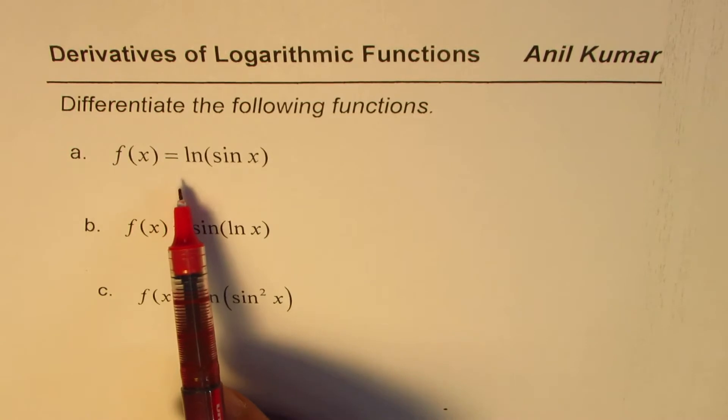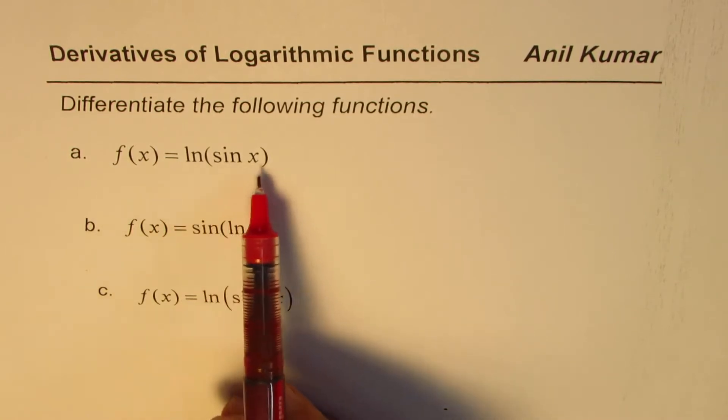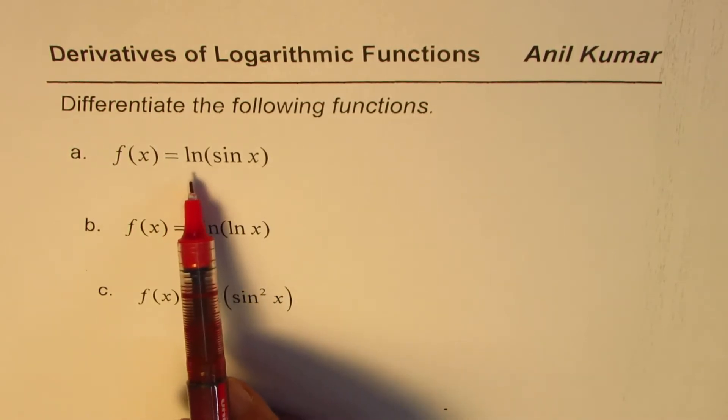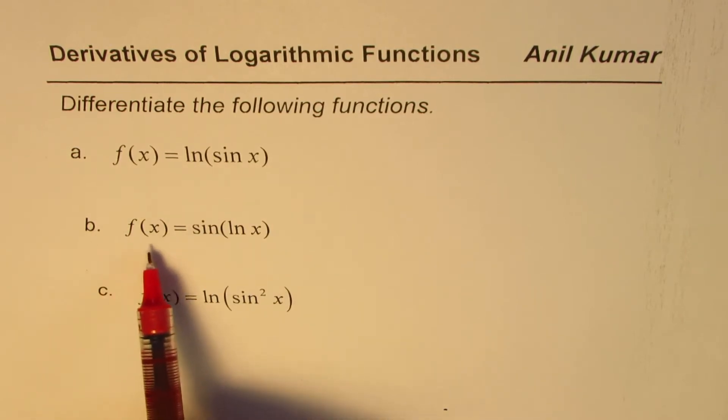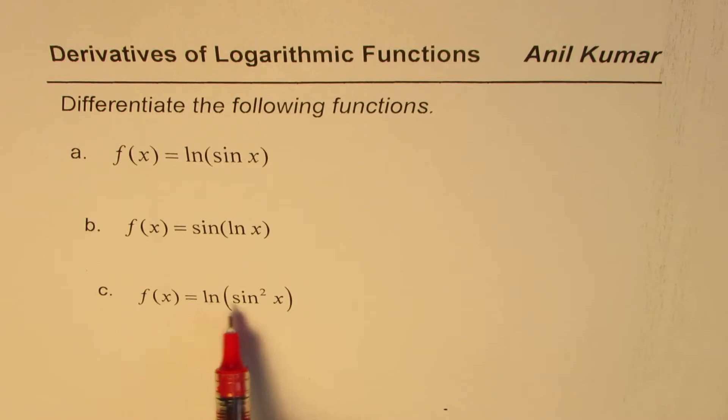F of x equals ln sine x. ln is a natural log which is to the base e. B is f of x equals sine of ln x. F of x equals ln sine squared x. That's the third function for you.